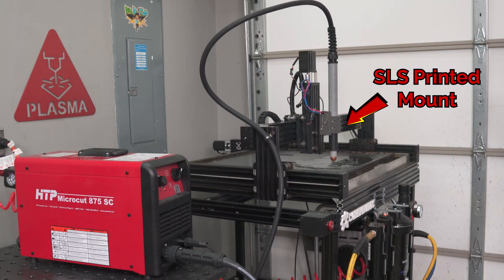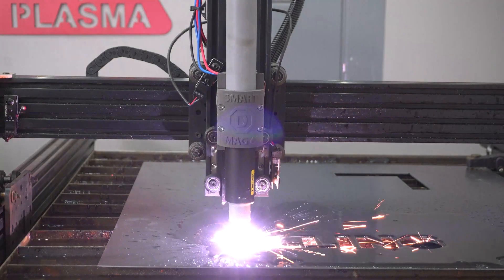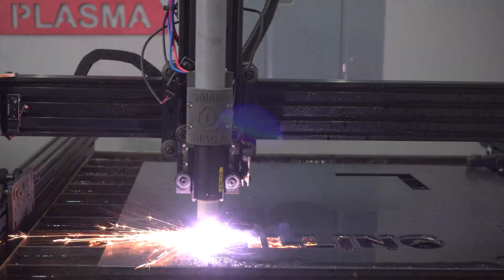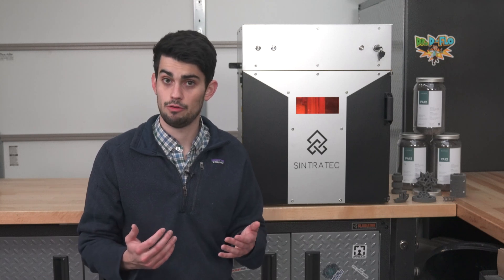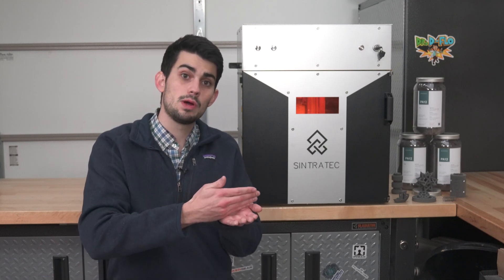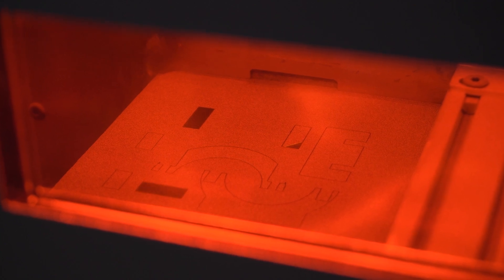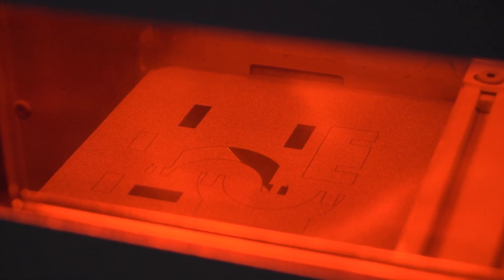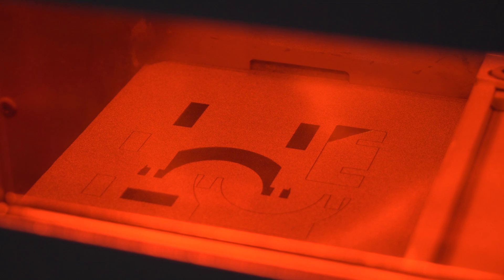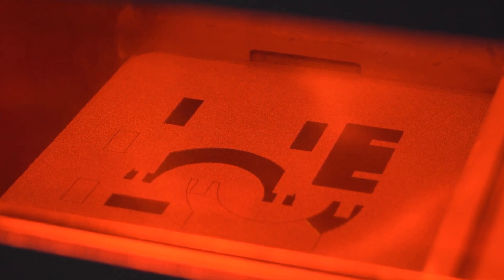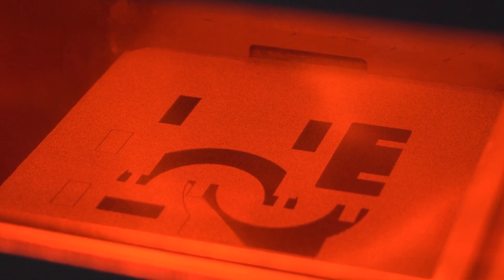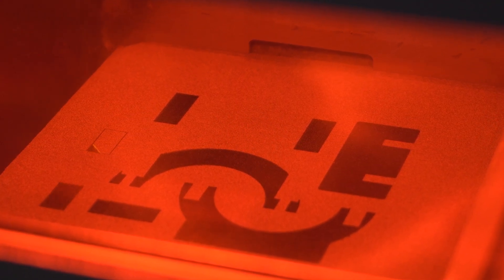These superior mechanical properties allow nylon printed parts to be used directly as reliable end-use products. It's also easier to scale up production with the SLS platform. Because the laser is able to quickly scan across the build area, the most time-consuming step is preparing and spreading a new layer of powder. It's often as fast to print multiple parts simultaneously as it is to print a single part, as long as the number of powder layers remains the same.